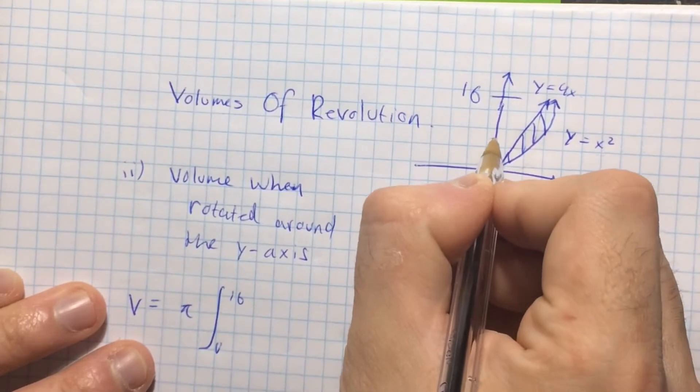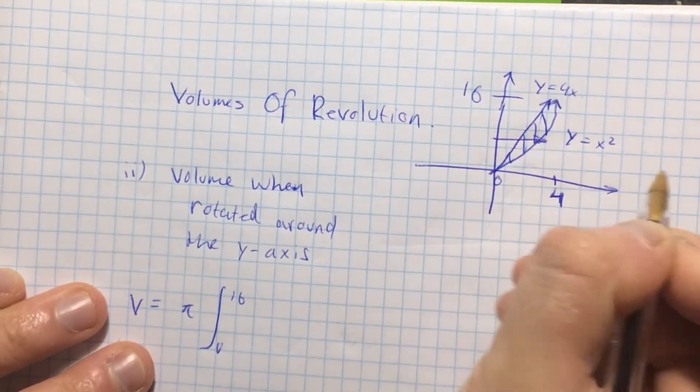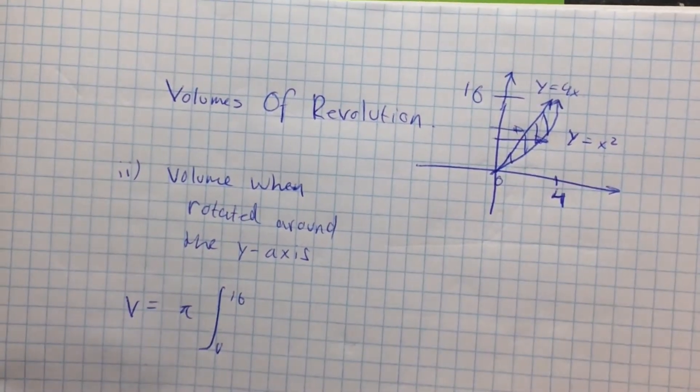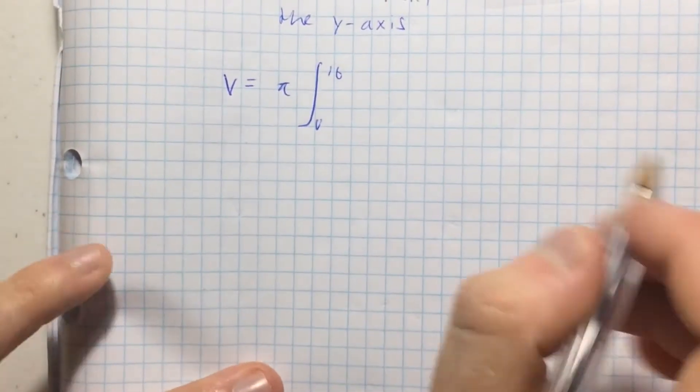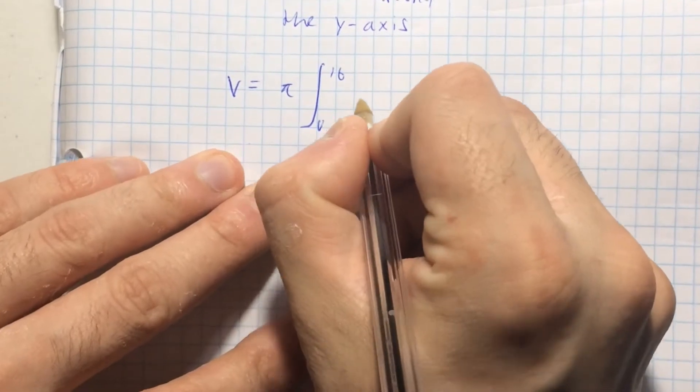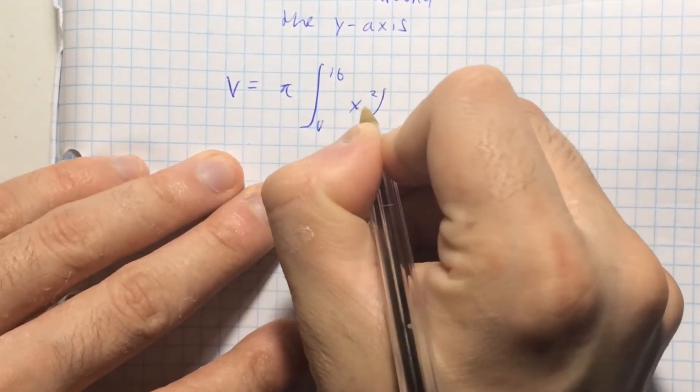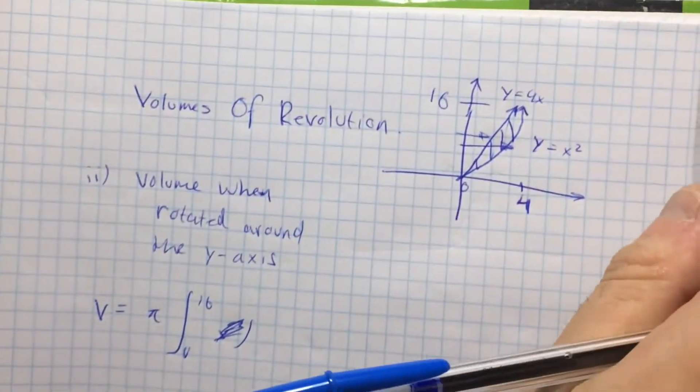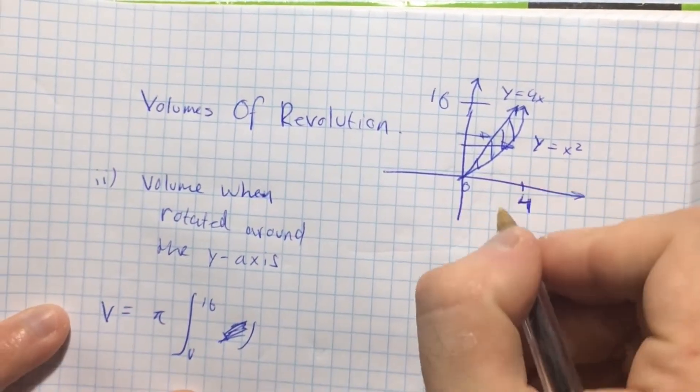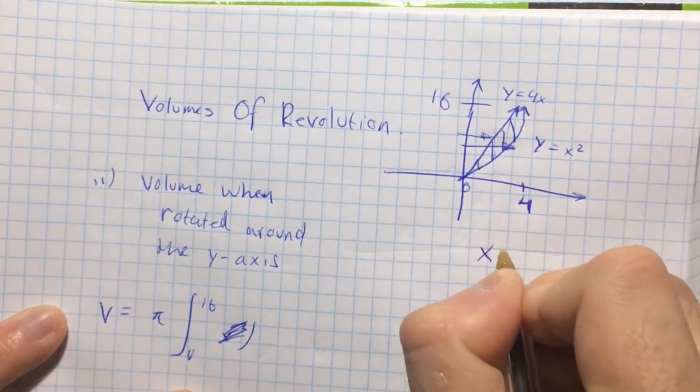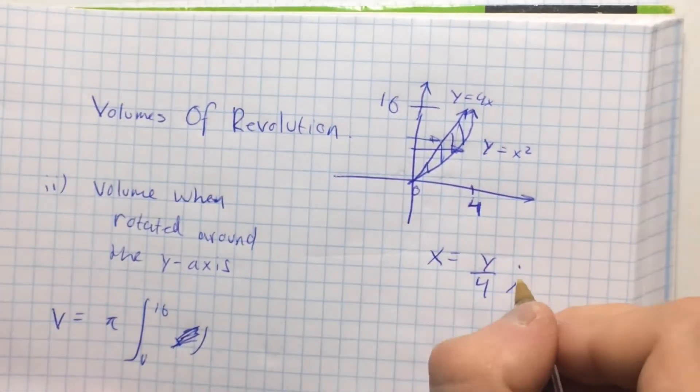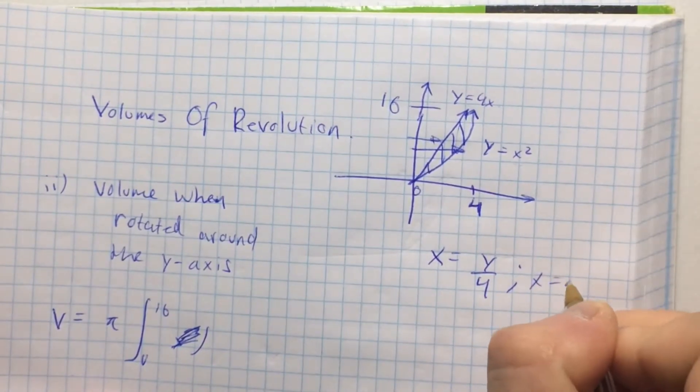So the first function I touch is x squared, and the second function I touch is 4x this time. Which means that when I take my integral, it's going to be x squared, oh no, sorry, it's not x squared, I'm so sorry, because this time I'm integrating with respect to y here. So I need to solve for x. So x is equal to y over 4 and x is equal to square root of y.